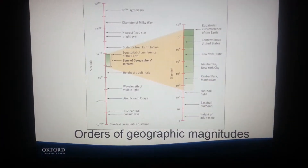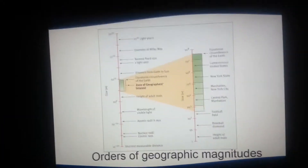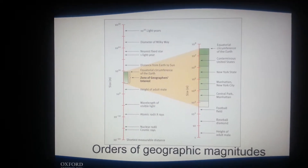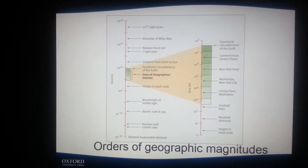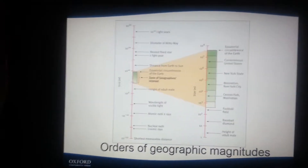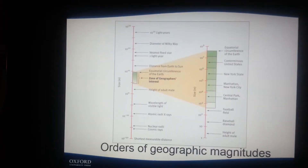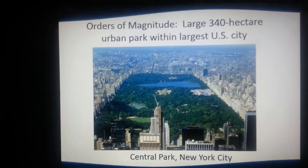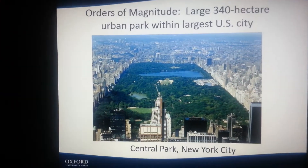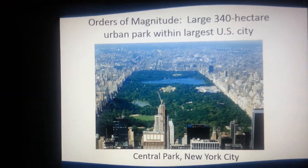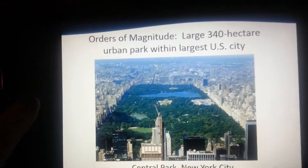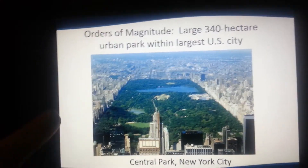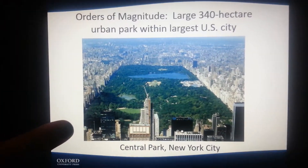We have orders of geographic magnitudes, and really the scope — the zone of geographers' interest — is basically what it shows. Orders of magnitude, and they just have an example of a central park.